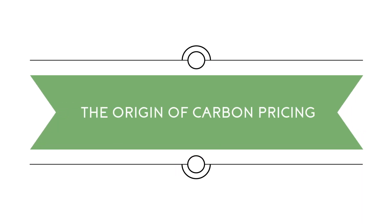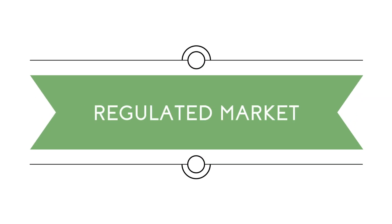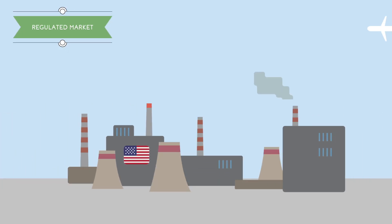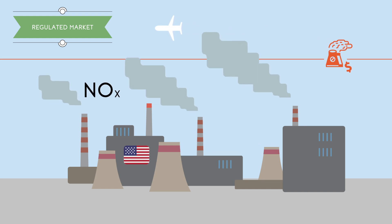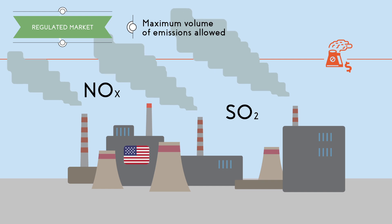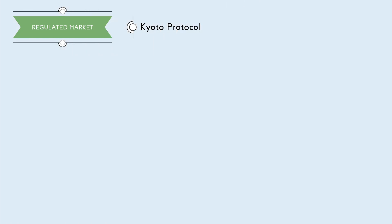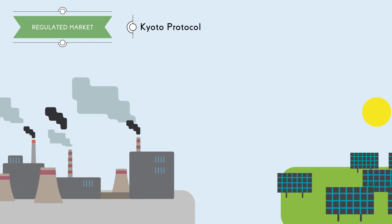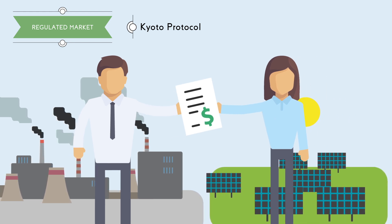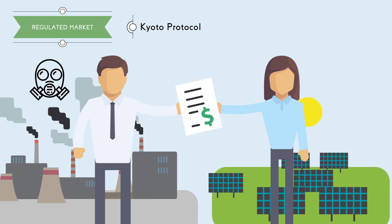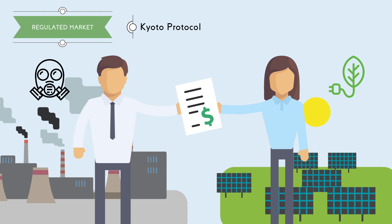The first attempt to quantify monetarily the cost of emitting polluting gases was made by the creation of emission markets, where a maximum permitted volume of emissions was fixed. The first emissions markets were created in the United States to regulate nitrogen oxide and sulfur dioxide emissions. On the basis of this experience, it was agreed under the Kyoto Protocol to create a world carbon dioxide emissions market, where countries and companies could buy and sell emission allowances based on whether they emitted greenhouse gases or helped reduce emissions through renewable energies.